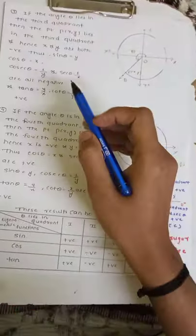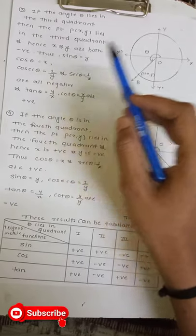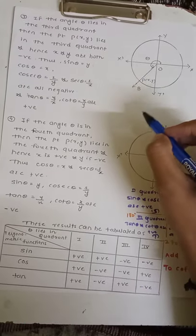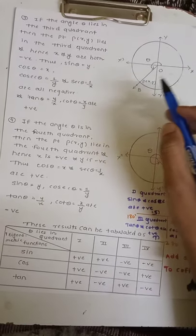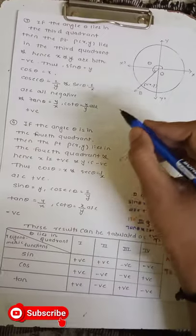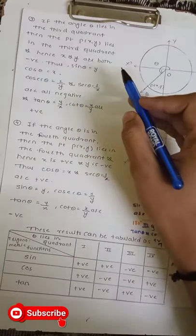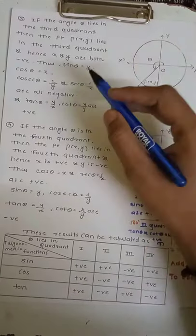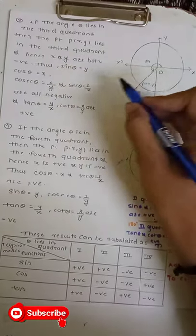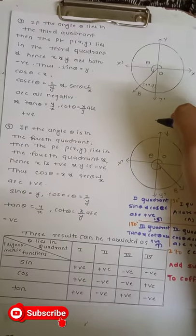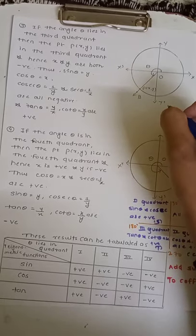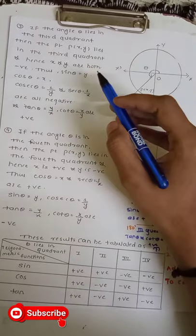In the third case, if the angle θ lies in the third quadrant, then the point P(x, y) lies in the third quadrant and hence x and y are both negative. The x value on the left side is always negative and the y value on the lower side is always negative, so both x and y are negative.